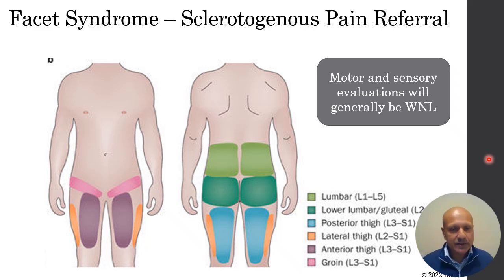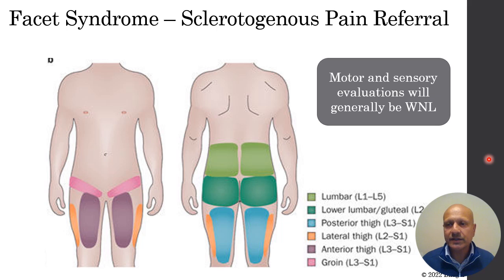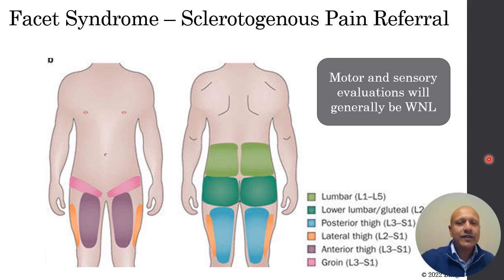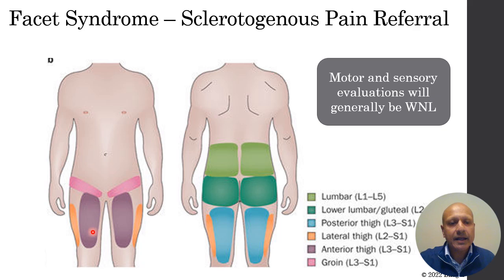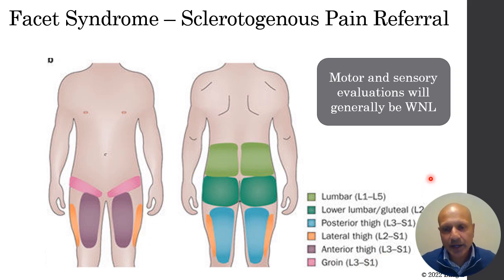I thought this was interesting — I've seen this go all sorts of different directions in my years of caring for patients. But it's good to have at least some idea that if it's in the upper lumbars, the referral tends to be higher up. If it's more of an L3, L4, or L4-L5 type of facet, you might actually see a little bit of inguinal pain, anterior thigh pain, and posterior thigh pain. There are also some lateralizations that occur which are very unique to facet.